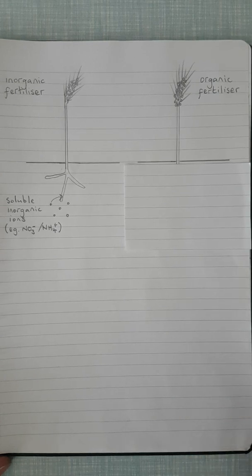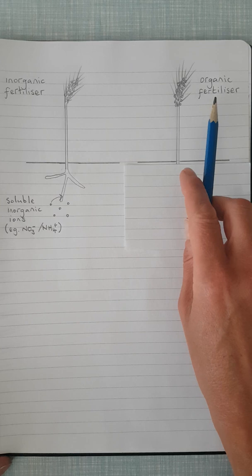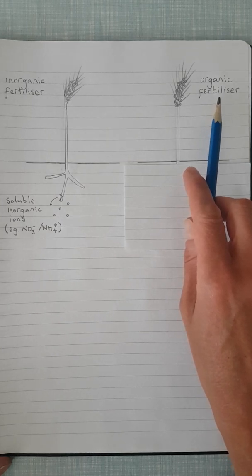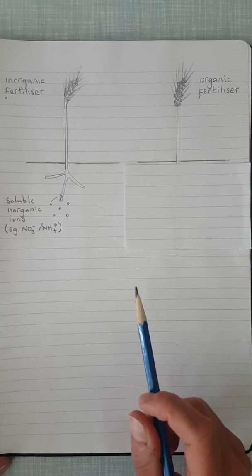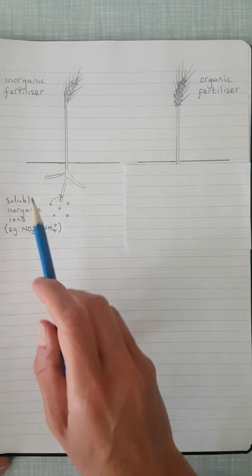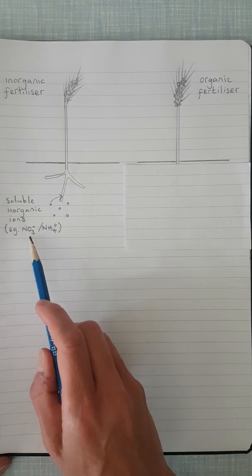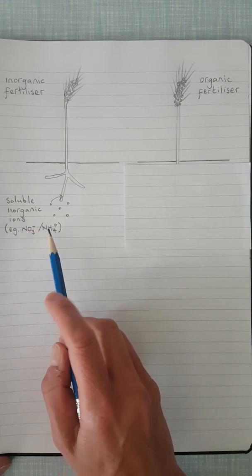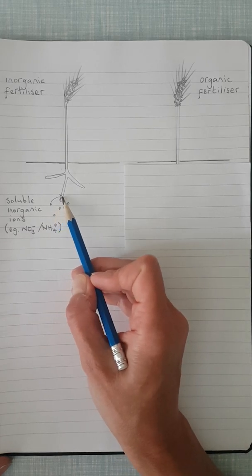This tutorial is about the different types of fertilizers that can be used in agriculture. We're going to compare inorganic and organic fertilizers and think about the advantages and disadvantages of both. Inorganic fertilizers are simply soluble inorganic ions like nitrates or ammonium ions that are applied to the soil and can be taken up directly by the plant.